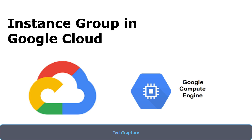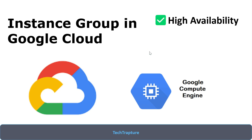So what is an instance group in Google Cloud and why should we use it? With the help of instance groups we can achieve the full advantages of cloud — the main difference between on-premises and cloud is that we can easily achieve high availability and scalability. With instance groups we can achieve high availability and scalability in Google Cloud with very simple steps.